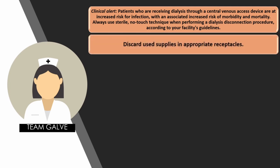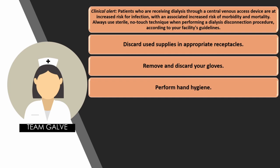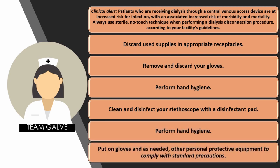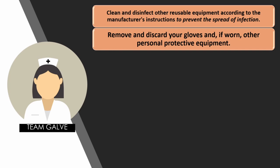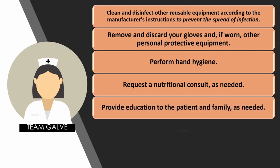Discard used supplies in appropriate receptacles — yellow for infectious waste, black for ordinary waste, orange for soiled items, and sharps container for sharps. Remove and discard gloves. Perform hand hygiene. Clean and disinfect your stethoscope with a disinfectant pad. Perform hand hygiene again and put on PPE to comply with standard precautions. Clean and disinfect other reusable equipment according to manufacturer's instructions. When finished with CKRT, remove and discard gloves and PPE. Perform hand hygiene. Request a nutritional consult as needed — refer to dietary services or a dietician. Provide education to the patient and family as needed. Perform hand hygiene and document the procedure.